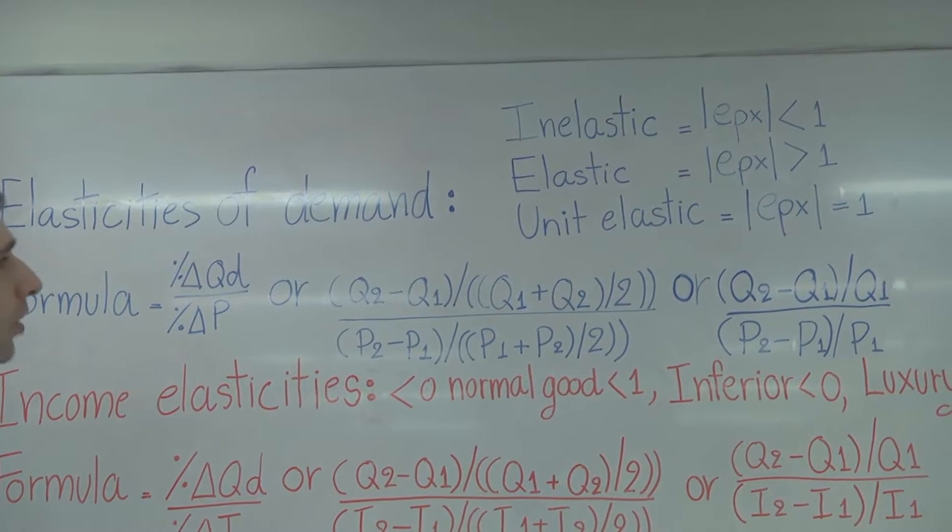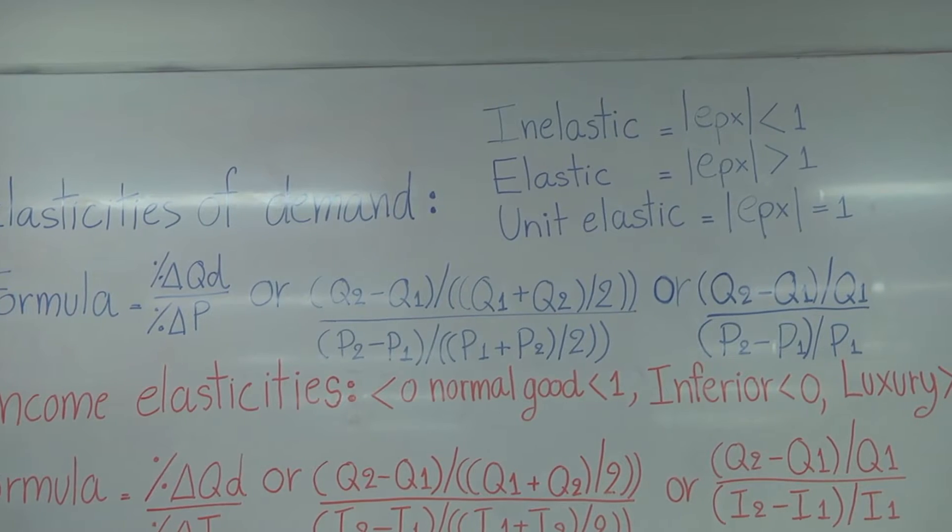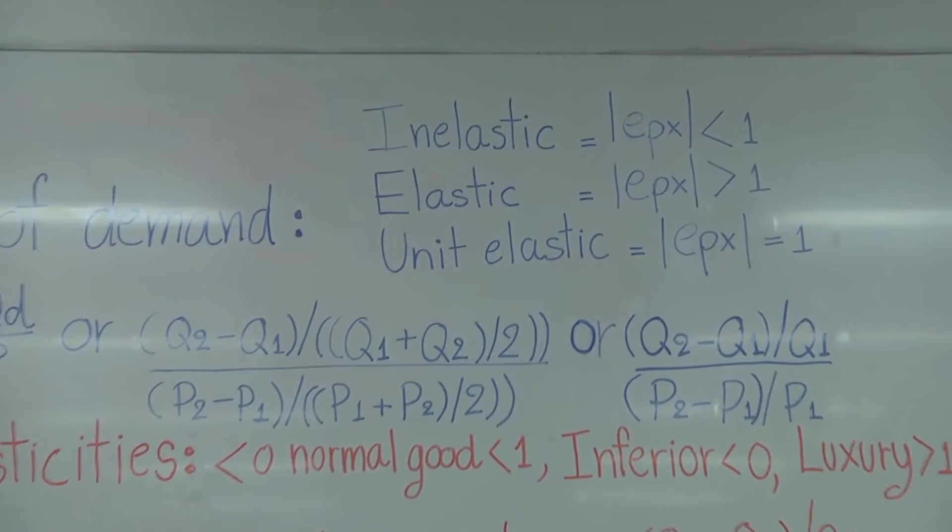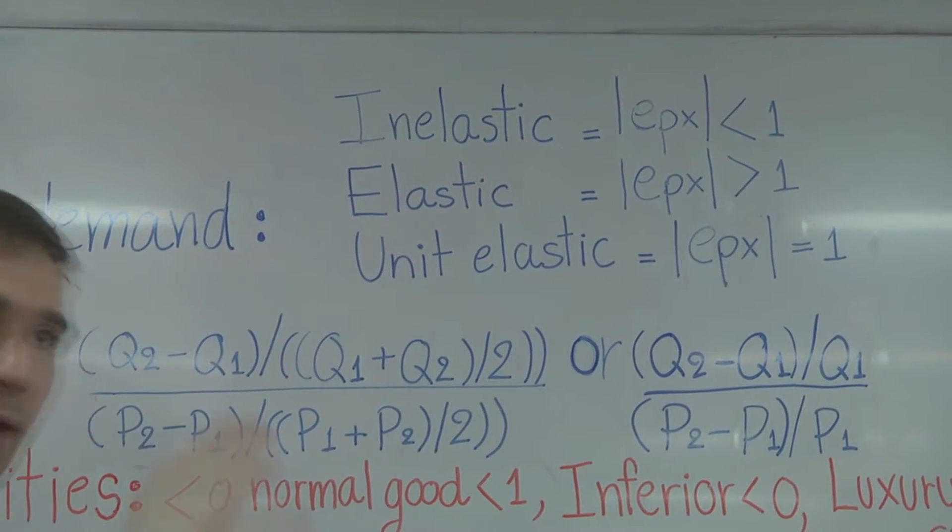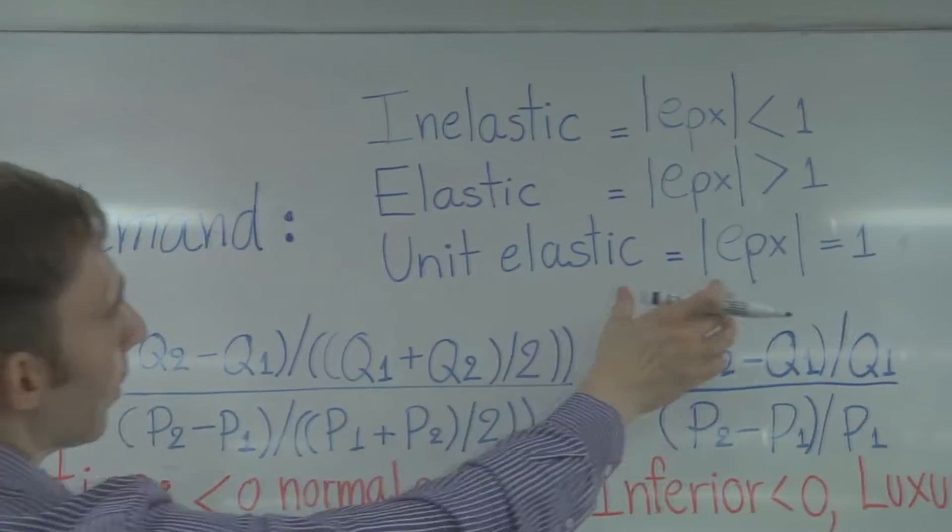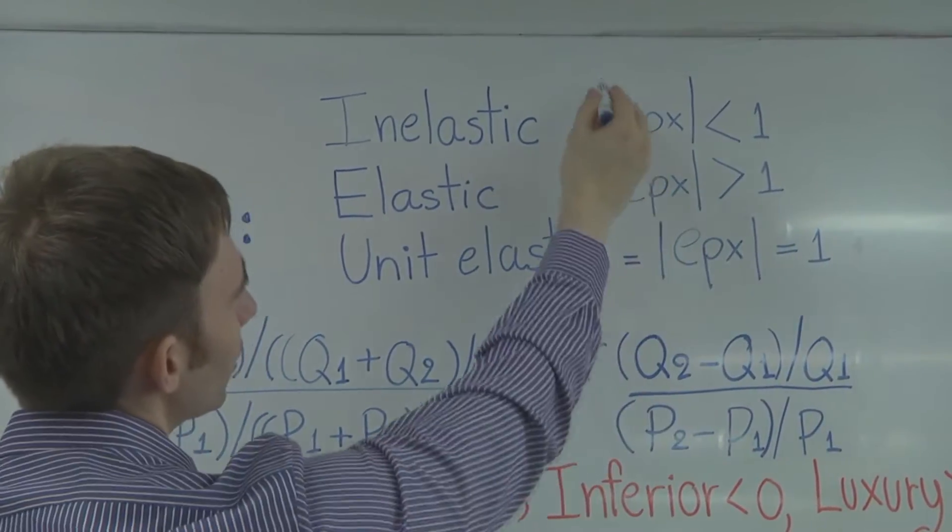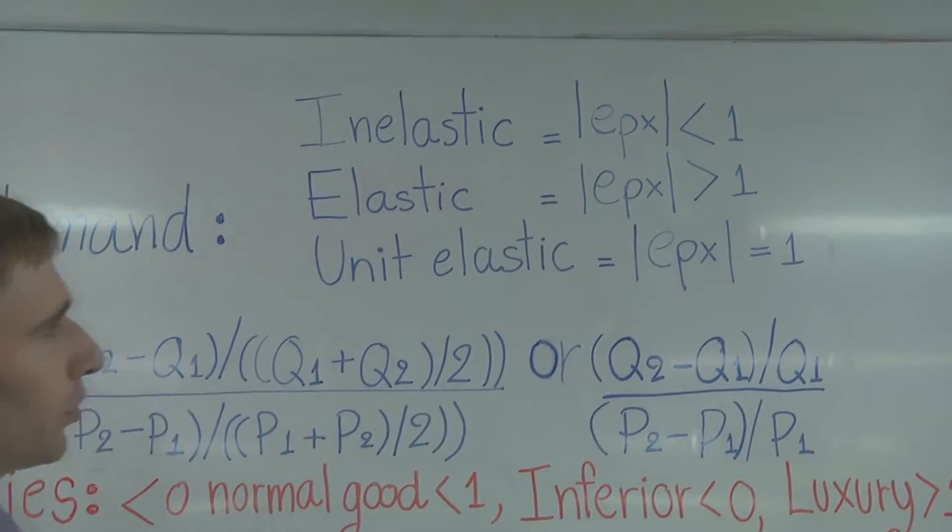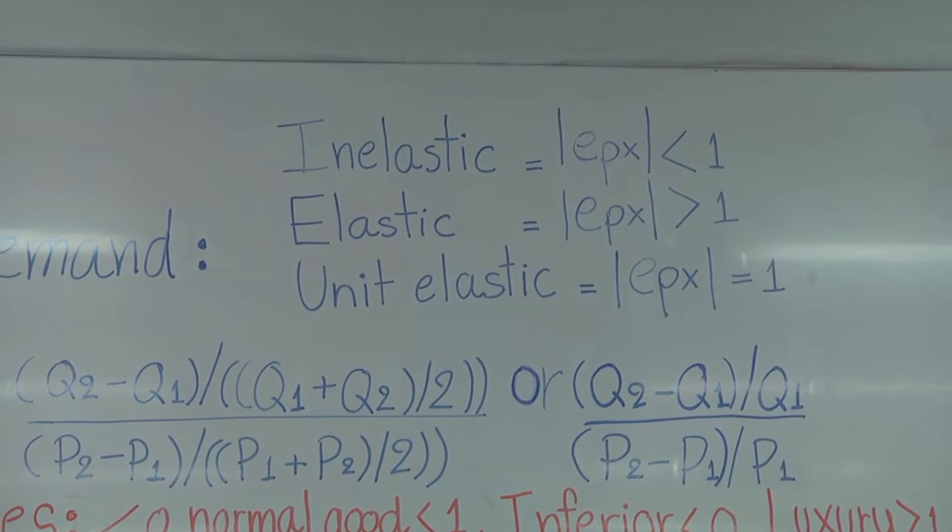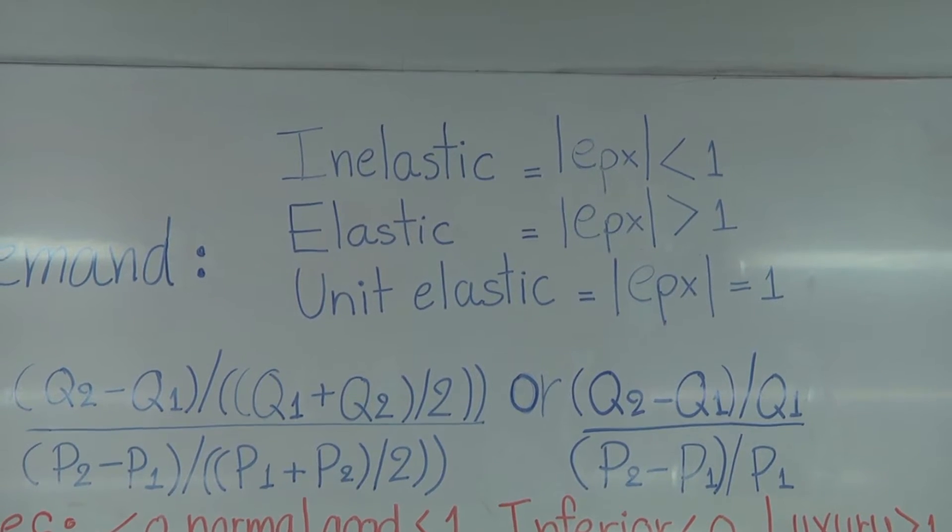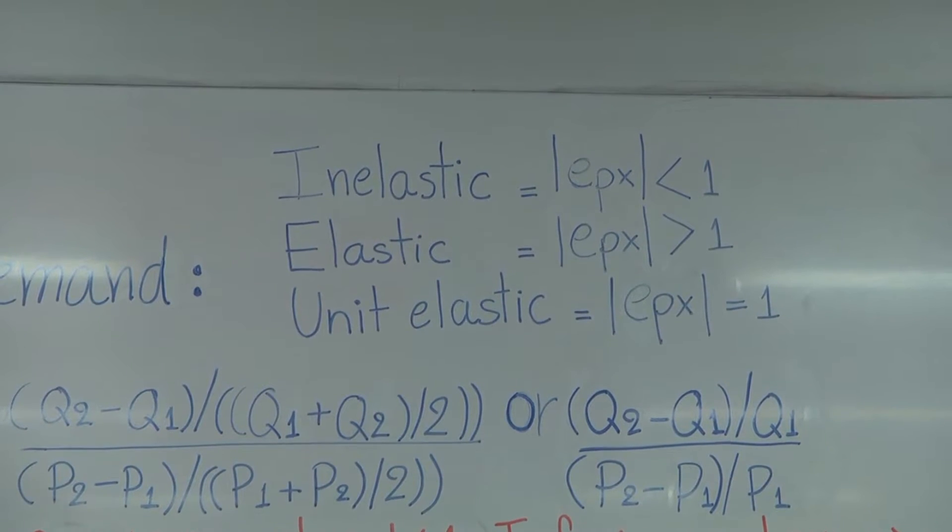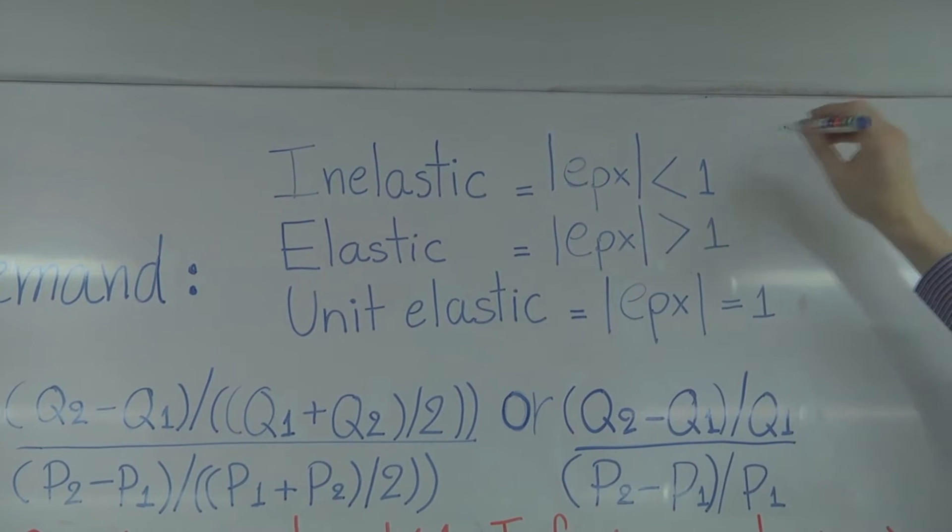And so you're going to get an answer, and that answer is probably going to be a negative number because it's the elasticity of demand. And demand is a downward slope. So what we want to do then is we want to take our answer and use the absolute value of our answer. If our answer is less than one, that is inelastic.